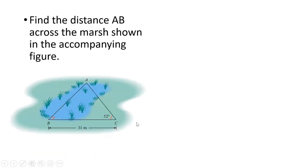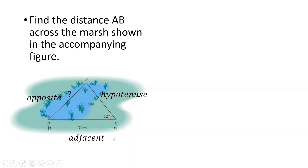Example number two: find the distance AB across the marsh shown in the accompanying figure — that distance is unknown. The right angle is 90 degrees, so the side opposite it is the hypotenuse. Using 52 degrees as our reference angle, the unknown AB is the opposite side, and the known value for the adjacent side is 31 meters.